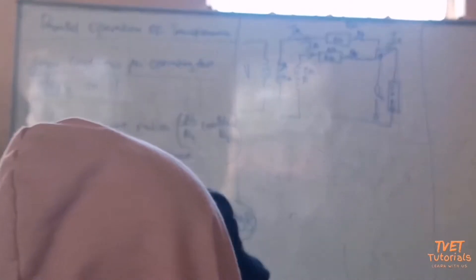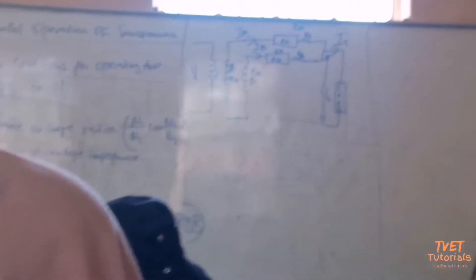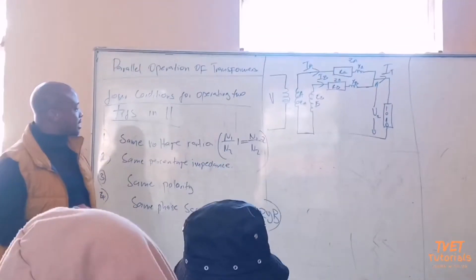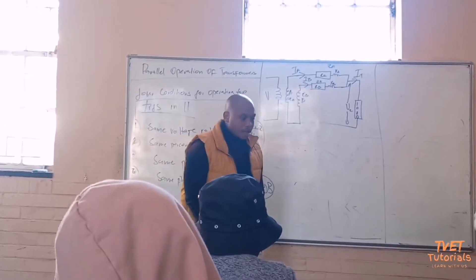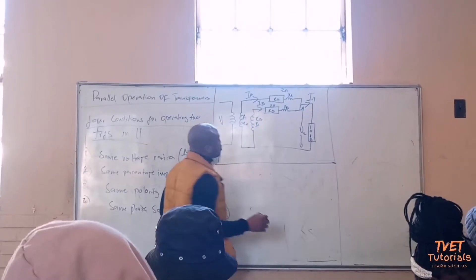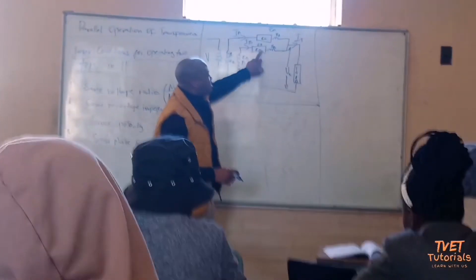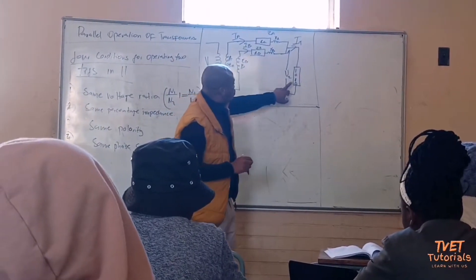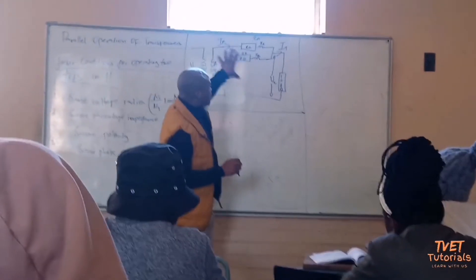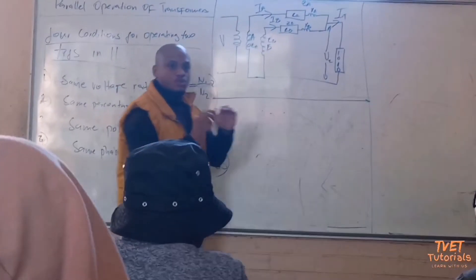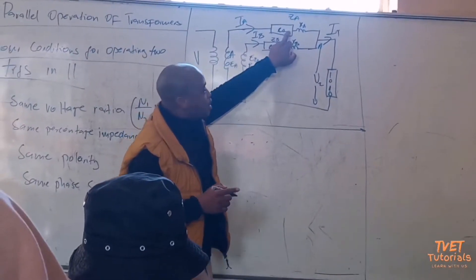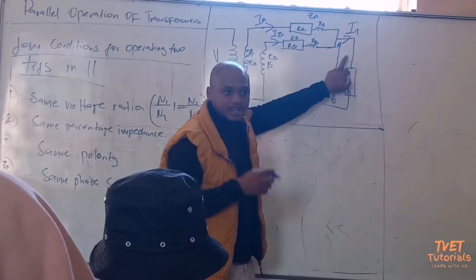Here I will have a back EMF EA and a back EMF EB. One of the conditions says that they must have the same percentage impedance. We have two transformers, Transformer A and Transformer B, both contributing to a common load.